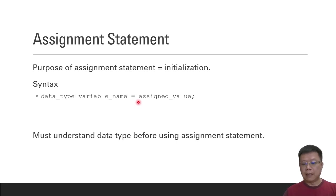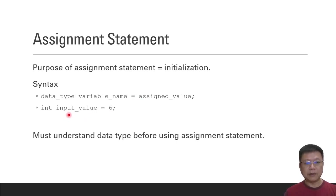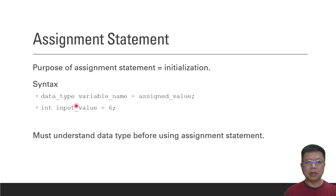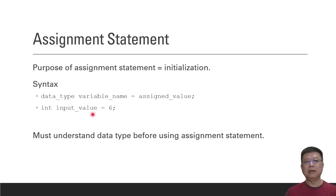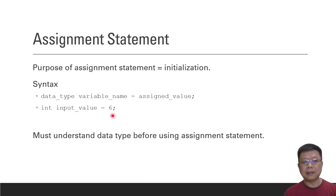For example, if you have a value of six, the statement would be: integer input_value = 6. This means six is assigned to the variable input_value. We don't say 'input_value equals six' — we say 'six is assigned to input_value'.